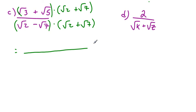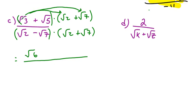Let's foil the numerator. First: radical 3 times radical 2 is radical 6 — if they have the same index, you keep the index and multiply what's inside the radical. Outside: radical 3 times radical 7 is plus radical 21. Inside: radical 5 times radical 2 is plus radical 10. Last: radical 5 times radical 7 is radical 35.